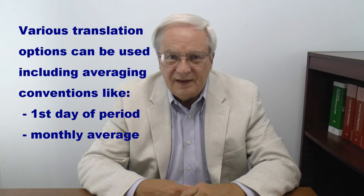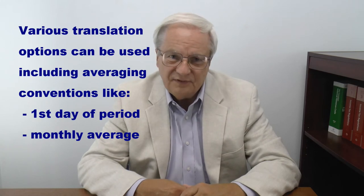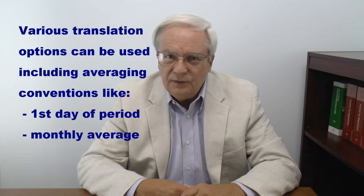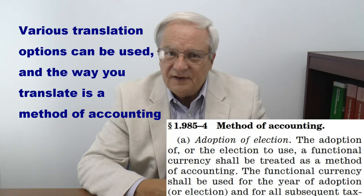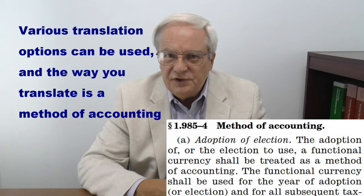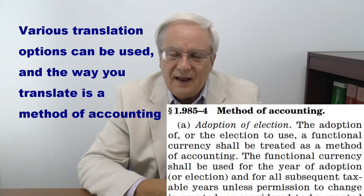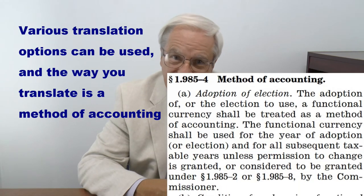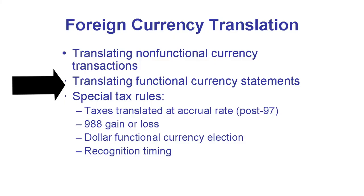Many businesses use the rate on the first day of the period since it is available when the transaction happened. Other rates are permitted, including the average rate for the day, week, or month. Whatever method you use is considered a method of accounting. To change this method of accounting for tax, you must get IRS permission, and you might have to fight your auditors to change your book method.